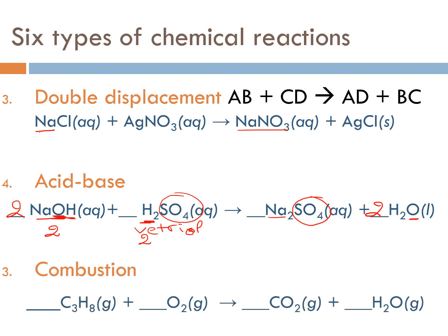Finally, combustion — again the example of propane. Start from carbon: put a three in front of CO₂. For hydrogen: eight atoms, four pairs, so put a four in front of H₂O. Then oxygen: 3 × 2 = 6 from CO₂, plus 4 × 1 = 4 from water, gives ten total. Ten divided by two is five pairs — put a five in front of O₂, and the propane combustion equation is balanced.